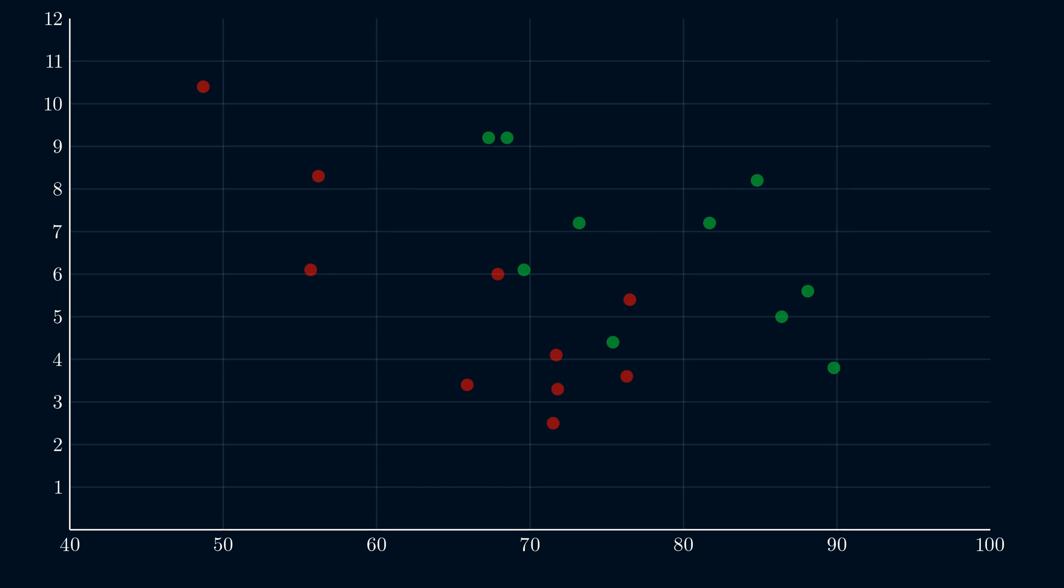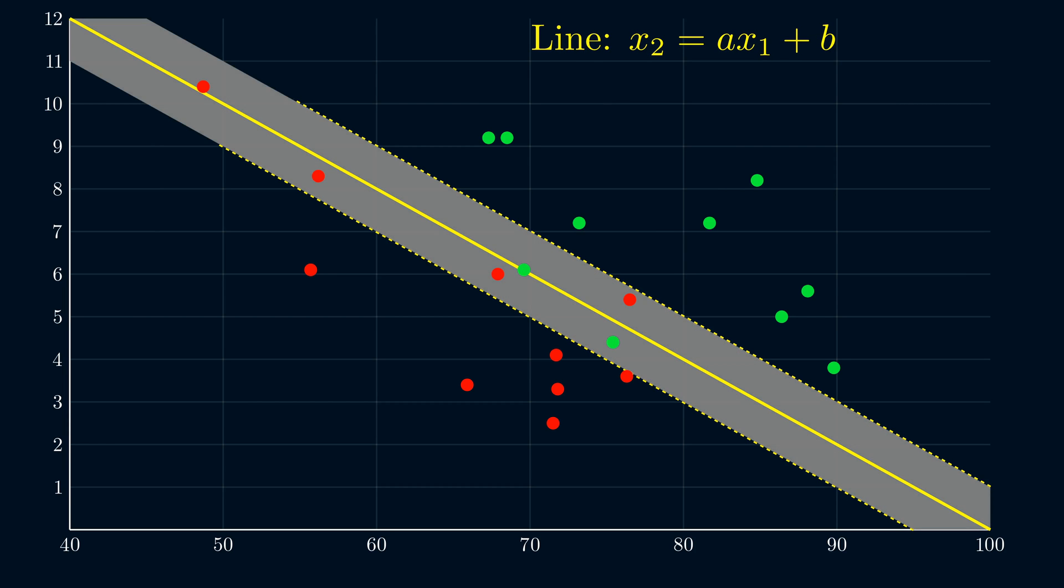Now, let's move on to the case where there isn't a line separating the two classes. Suppose we again consider a line and a buffer. Here, the buffer is a distance of 1 away from the line, but it's a parameter of the model that can be adjusted.